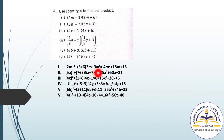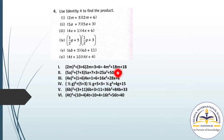Solving: (2M)² gives 4M square. A plus B means 3 plus 6 equals 9, and 9 into 2M gives 18M. AB means 3 into 6 equals 18. So the answer is 4M square plus 18M plus 18.